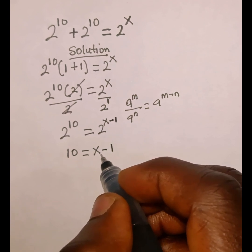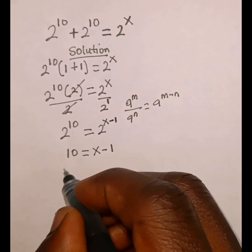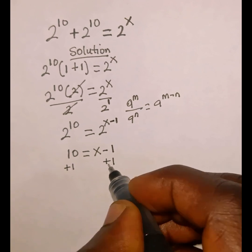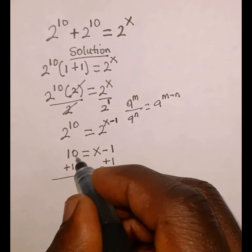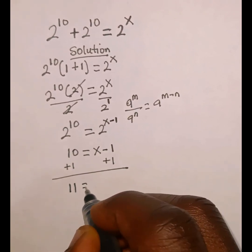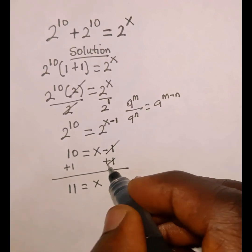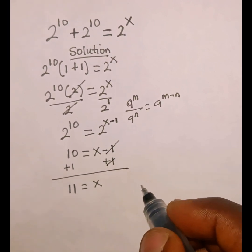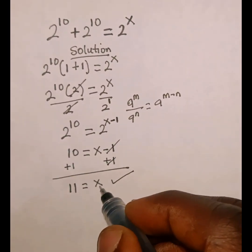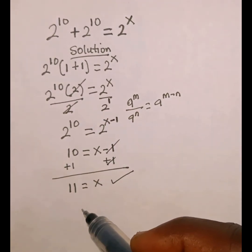Now we are looking for the value of x. We add 1 to both sides — we add 1 here and also add 1 here. So 10 plus 1 gives us 11, which is equal to x, and negative 1 and positive 1 cancel. Therefore, x equals 11 is the value that satisfies this simple exponential equation.